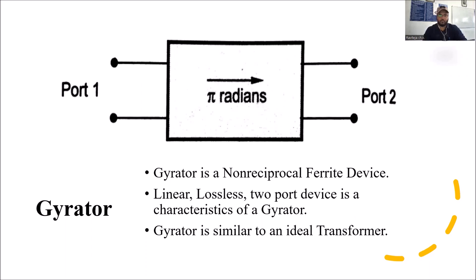Hello everyone, welcome to the course of microwave engineering. In today's class we are going to learn about the gyrator. Gyrator is a microwave ferrite device, also called a non-reciprocal ferrite device. It has several characteristics: linearity, lossless, and it is specially designed as a two-port device.